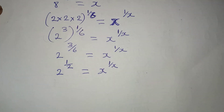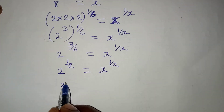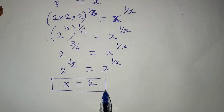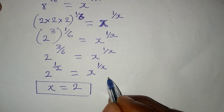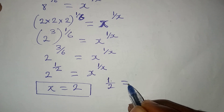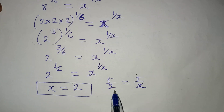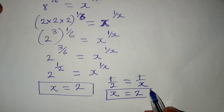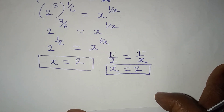At this point, we compare the values. If we compare the bases, we have x equal to 2. Now let's pick the powers — we have 1 over 2 equal to 1 over x. Since the numerators are both 1, the denominators must be equal, meaning x is also equal to 2. So whether we compare the powers or the bases, x is equal to 2.